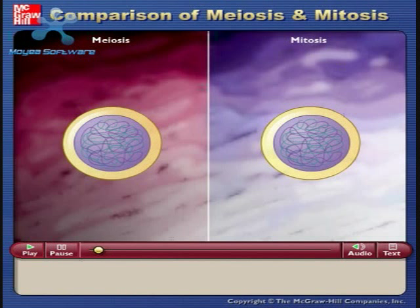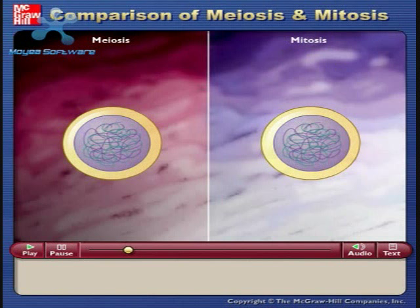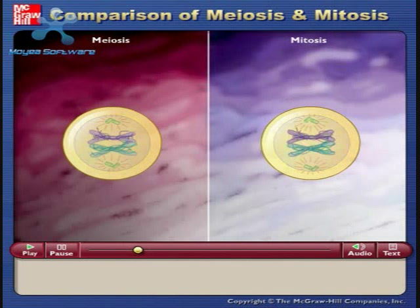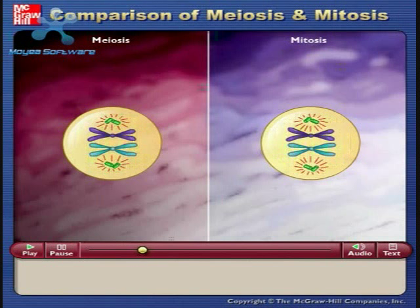Prior to meiosis or mitosis, DNA replication occurs. In both meiosis and mitosis, the nuclear membrane breaks down as the DNA organizes into chromosomes.